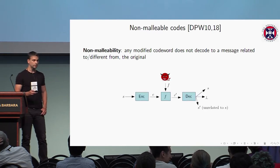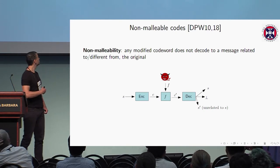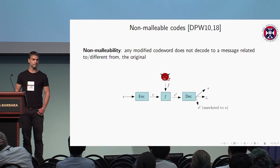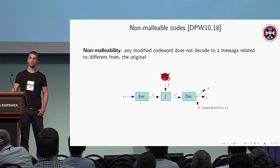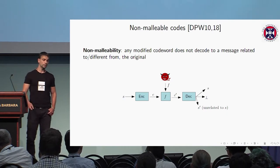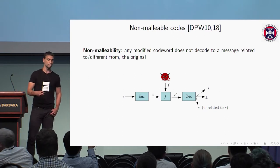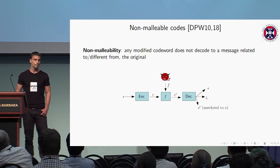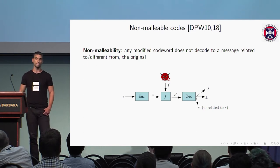The tampering experiment we consider is the following: we have the adversary and a message S. First, we encode our message and get a codeword C. Then the adversary applies a tampering function F on the codeword, and we get codeword C'. Then decoding takes place. The output of the decoder can be either the original message, a special symbol bottom indicating C' is an invalid codeword, or a message S' which should be unrelated to S.